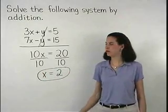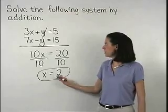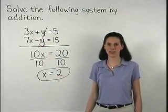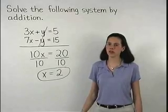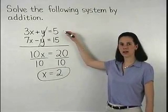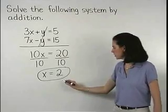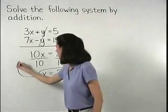To find y, we simply plug a 2 back in for x in either one of our two given equations. So let's go with our first equation, 3x plus y equals 5. If we plug a 2 back in for x,